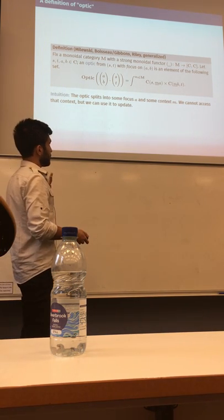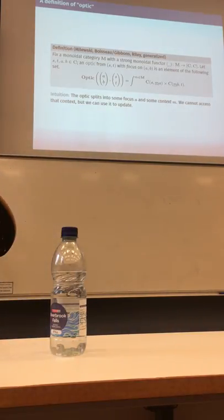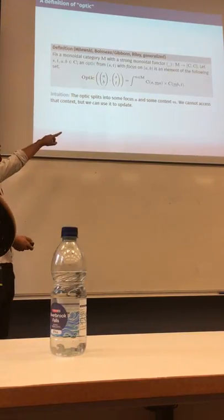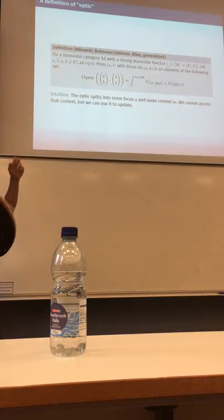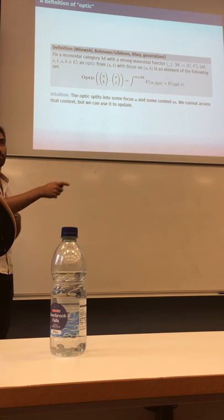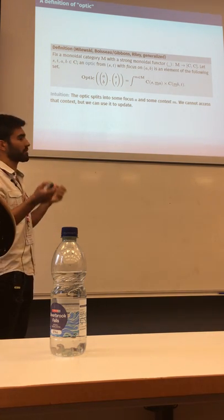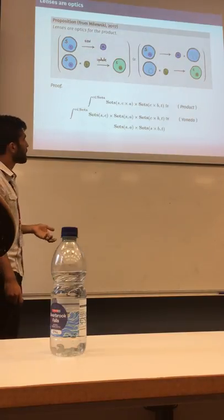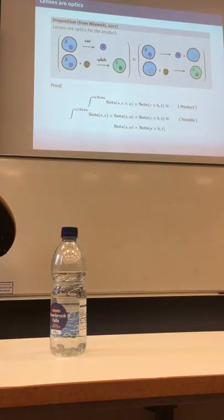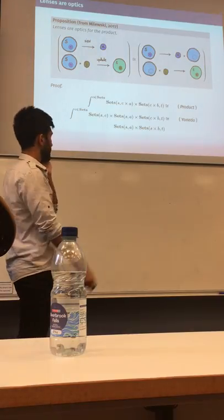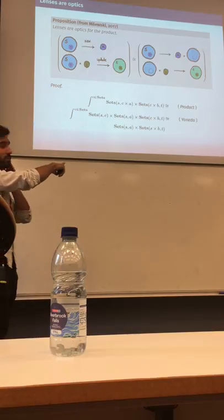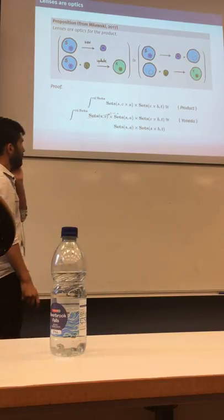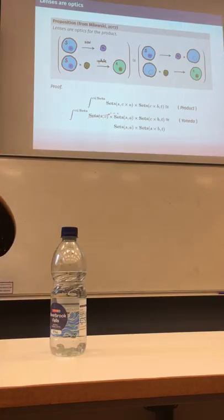I need to now justify that this definition actually captures the examples we were talking about. The fact that we cannot access the context is important, and that we cannot access the context needs to be captured naturally — the naturality conditions of the coend model this. So now I need to show you that the examples I gave at the beginning can be captured in this definition. For example, lenses are optics for the product action. We write the definition, the functor splits via a product, then we apply the Yoneda lemma — substituting everything we see in the formula — and we get back the formula for a lens.